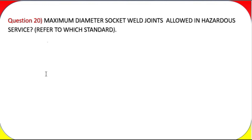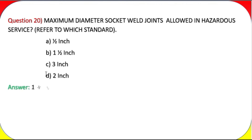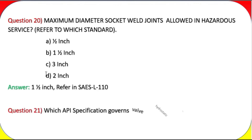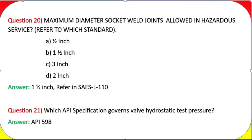Question 20: Maximum diameter socket weld joints allowed in hazardous service — refer to which standard? Options: (a) 1/2 inch, (b) 1½ inch, (c) 3 inch, (d) 2 inch. Answer: 1½ inch. Refer to SAES-L-110. Question 21: Which API specification governs valve hydrostatic test pressure? Answer: API 598.